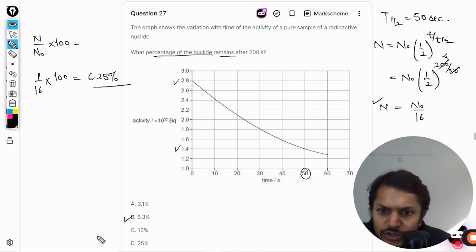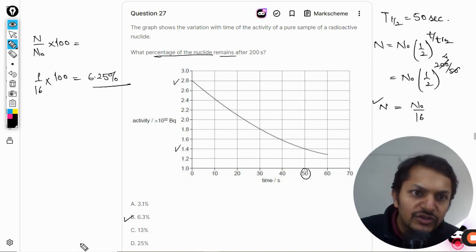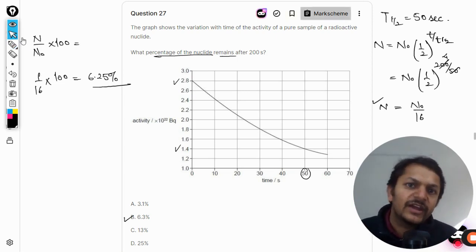And approximately, we can say that 6.3 percent should be the correct answer. So this is how we do this question, and B will be the correct answer. Let us verify it from the mark scheme that we are getting the correct answer or not.